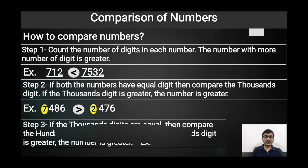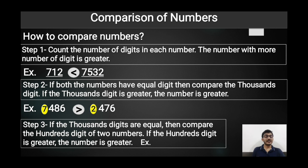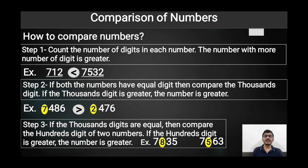In step three, if the thousands place is the same in both numbers, we compare the hundreds place. In the example, the thousands place is equal in both numbers, so we compare the hundreds place. In the first number the place value of hundreds is 800, and in the second it is 500. Since 800 is greater than 500, we write that 7835 is greater than 7563.